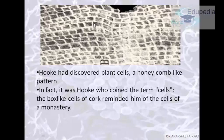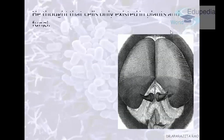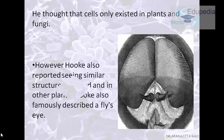Even though Mr. Hooke's microscope was advanced for its time, it was not advanced enough. He only saw the cell walls, which are only present in plant cells — this will be covered in further lectures. Because of that, he thought that only plants and fungi have cells. Even so, he still described the famous fly's eye, which had a distinctive appearance.